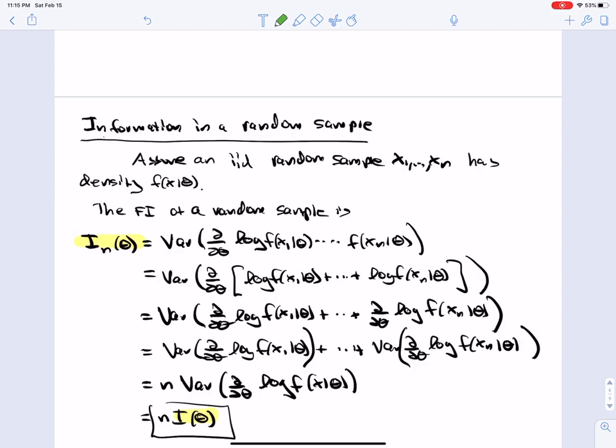So we have the derivative of the log of a product, which is the derivative of a sum of logs using our log laws. And the derivative distributes across the sum. And all of these summands are independent. So the variance distributes and they are all identically distributed. So these are all the same derivative of the log likelihood. So we get N times the variance of the score, essentially, or N times the Fisher information. So the sample Fisher information is just N times the Fisher information.